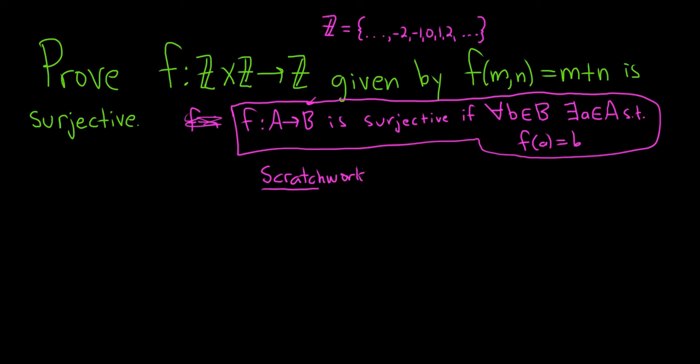So this is the scratch work for the proof. If we were trying to prove this, we would start by taking a b in B. So take, again, this is just the scratch work. Take b in B. So what is B? B is this. This is our B, and this is our A. So we take a b in Z.